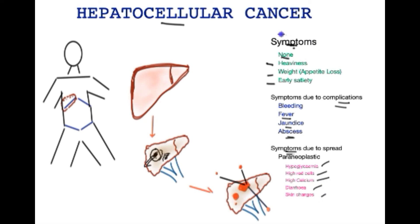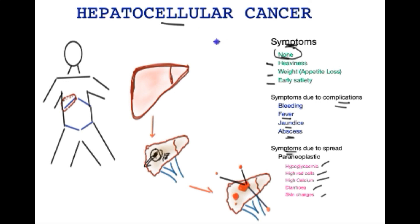In summary, early cancer does not cause any symptoms at all. It is only when the cancer progresses that we may see symptoms. Finally, patients may also present with symptoms secondary to the distant spread of the cancer, and those symptoms would depend upon the location. In the next video we shall explore the diagnosis of hepatocellular cancer.